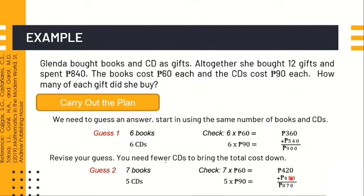Let's try 5 CDs and add 1 to the books, making it 7 books and 5 CDs — that's still 12 total. 7 books times 60 pesos is 420. 5 times 90 is 450. 420 plus 450 is 870 pesos — that's wrong. Guess 2 is wrong, so we need to revise again to get the correct answer.